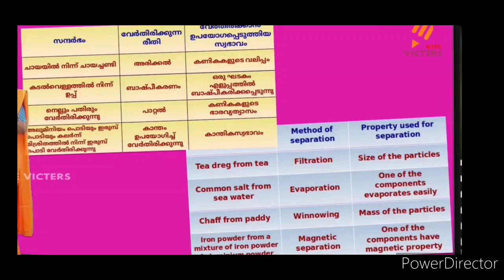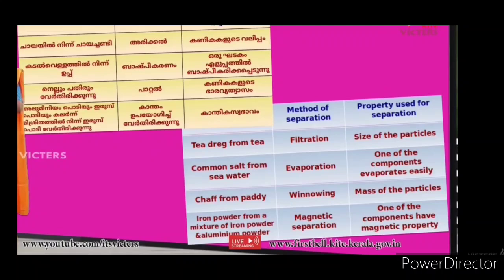The first thing to add in this method is the seed. Next, add a mixture of iron and aluminum powder. I use aluminum powder when I start. This is magnetic separation. One of the components has magnetic properties — iron powder. I am going to use a magnet to separate the iron powder.